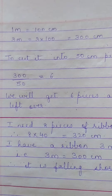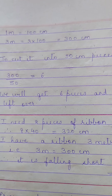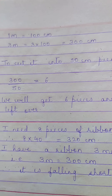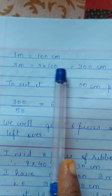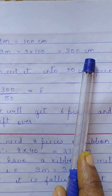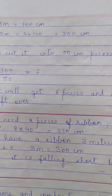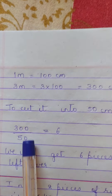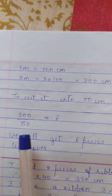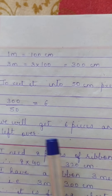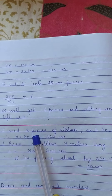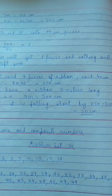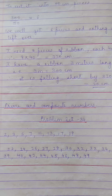Question 3: a ribbon is 3 meters long. Can we cut it into 50 centimeter pieces with nothing left over? Since 1 meter = 100 centimeters, 3 meters = 300 centimeters. Dividing 300 by 50 gives 6. So we get 6 pieces and nothing will be left over.